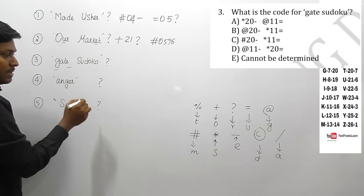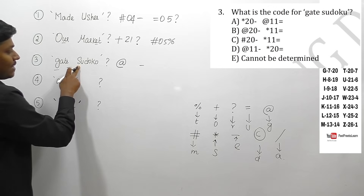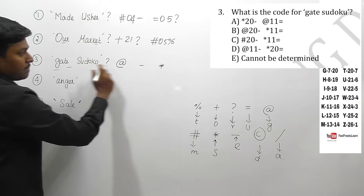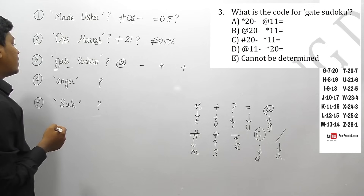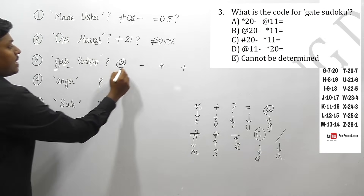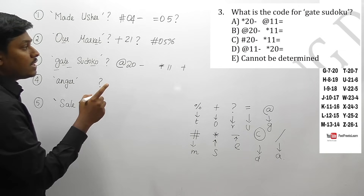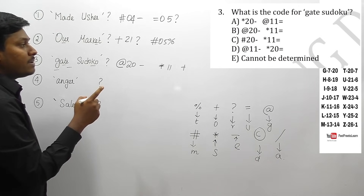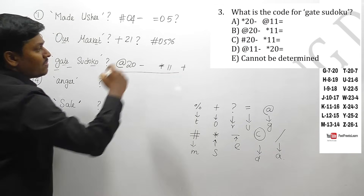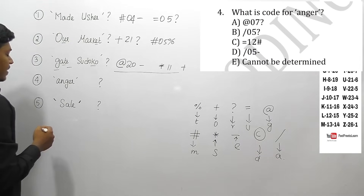Question 3: code for 'gate' and 'sudoku'. G is coded as at, E as minus, S as star, O as plus. The alphabetical order values are T = 20 and K = 11. So the codes are: at-20-minus for 'gate' and star-11-plus for 'sudoku'. Option B is your answer.